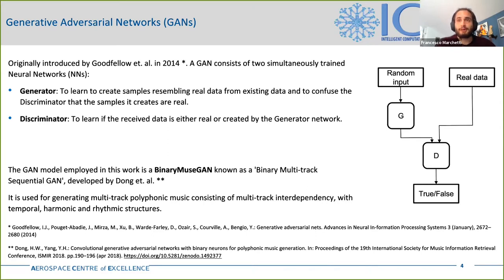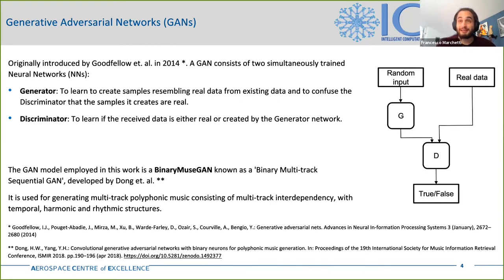The particular type of GAN employed in this work is a convolutional GAN with binary neurons developed by Dong and others, named Binary MuseGAN. This model was chosen since it proved to be able to generate multi-track polyphonic music consisting of multi-track interdependency with temporal, harmonic, and rhythmic structures.